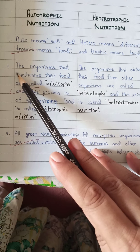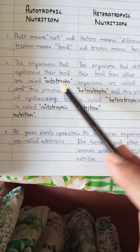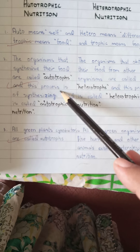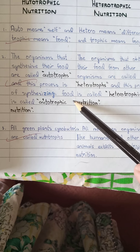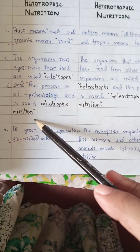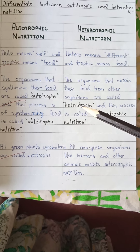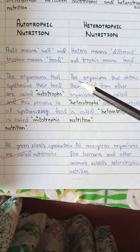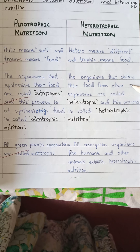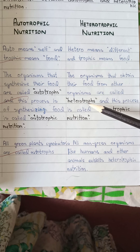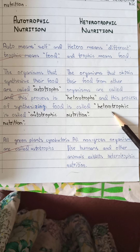Point number two: the organisms that synthesize their own food are called autotrophs, and this process of synthesizing food is called autotrophic nutrition. The second point of heterotrophic nutrition: the organisms that obtain their food from other organisms are called heterotrophs, and this process is called heterotrophic nutrition.